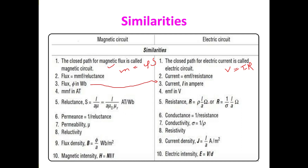Reluctance S is similar to resistance R. The formula for resistance is R = ρ×L/A. For reluctance, instead of resistivity ρ, we use permeability μ, but it appears in the denominator: S = L/(μ×A), which is the same structure as R = ρ×L/A. Permeability μ, also called magnetic conductivity, is analogous to electrical conductivity.